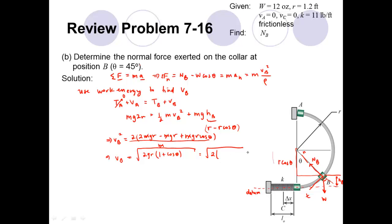Plugging in numbers: v_B equals the square root of 2 times g (32.2 ft/s²) times R (1.2 feet) times the quantity (1 + cosine 45°). Punching that into the calculator gives a velocity at point B of approximately 11.5 feet per second.